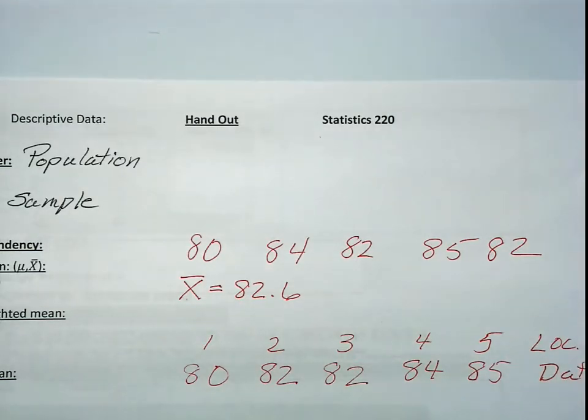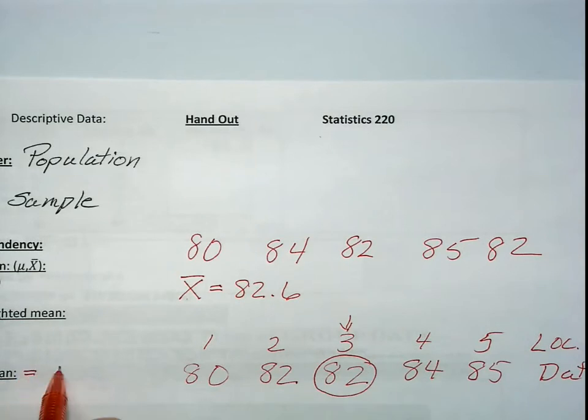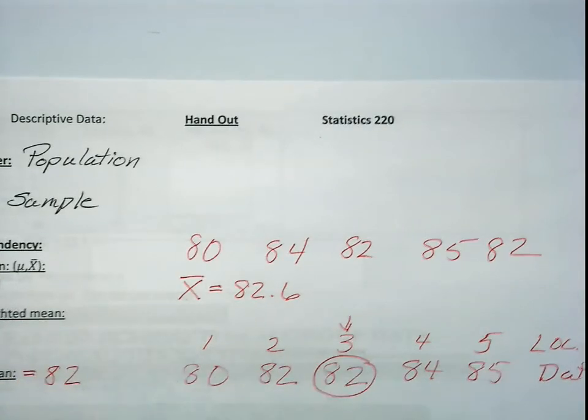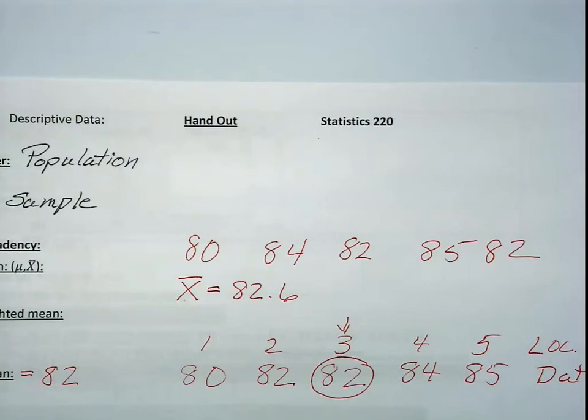These are your locator points, and these are your actual data points. To locate it, it's the middle data point, in this case three. Your median is 82, the middle data point.